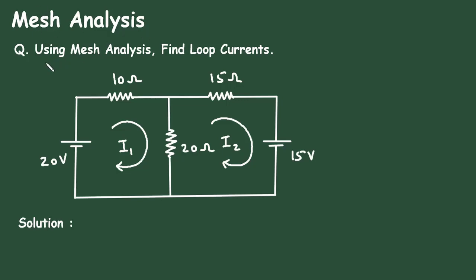Mesh analysis question: using mesh analysis, find the loop currents. For this circuit, we have to find current I1 and current I2 by using mesh analysis. These are the loop currents.